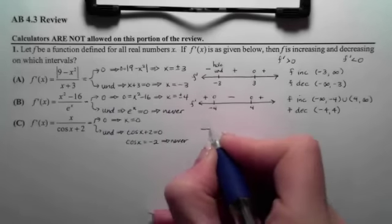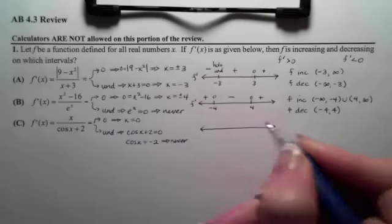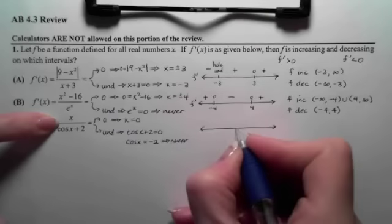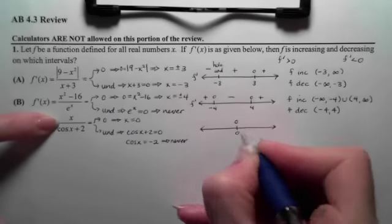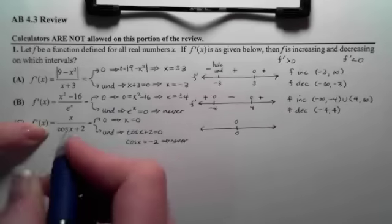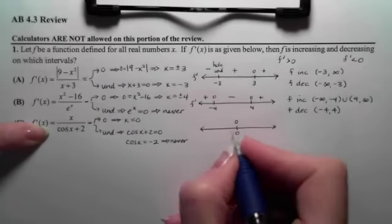So again, we only have critical values coming from the top, and that will be at 0. And prior to 0, the top will be negative. The bottom is still going to be positive.